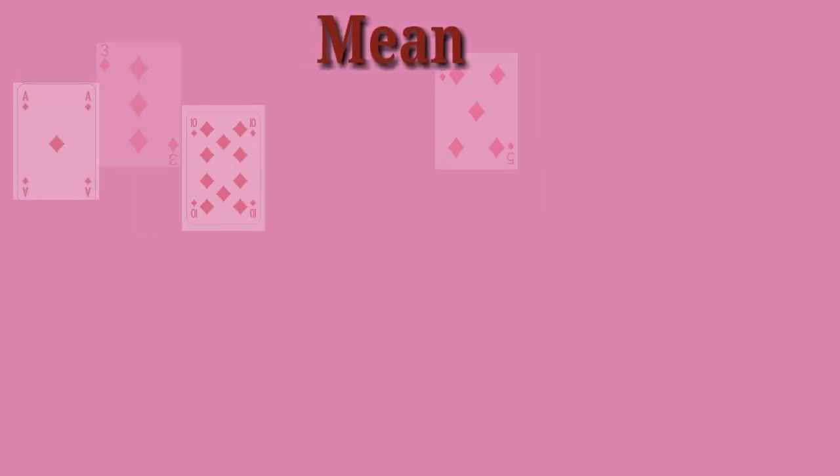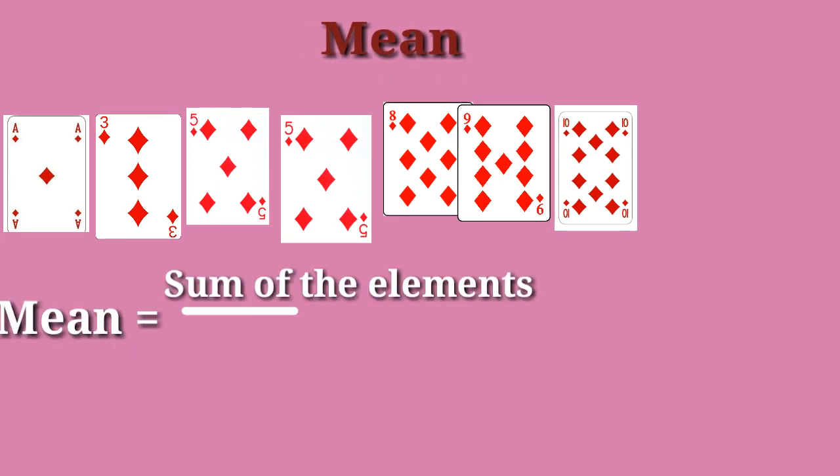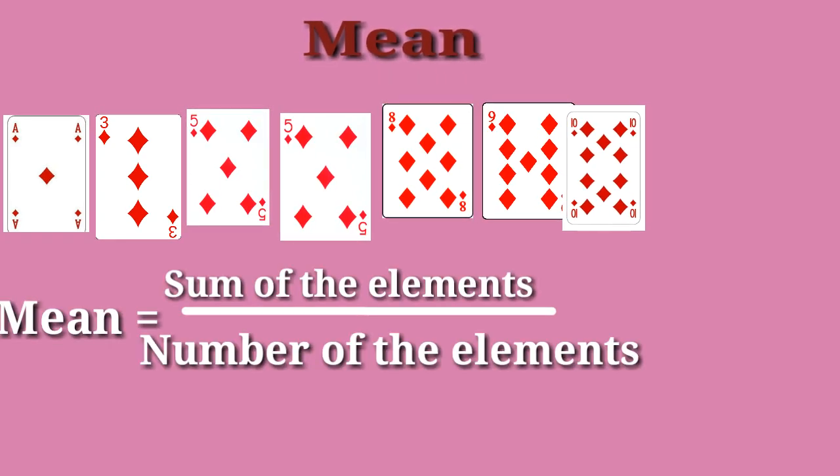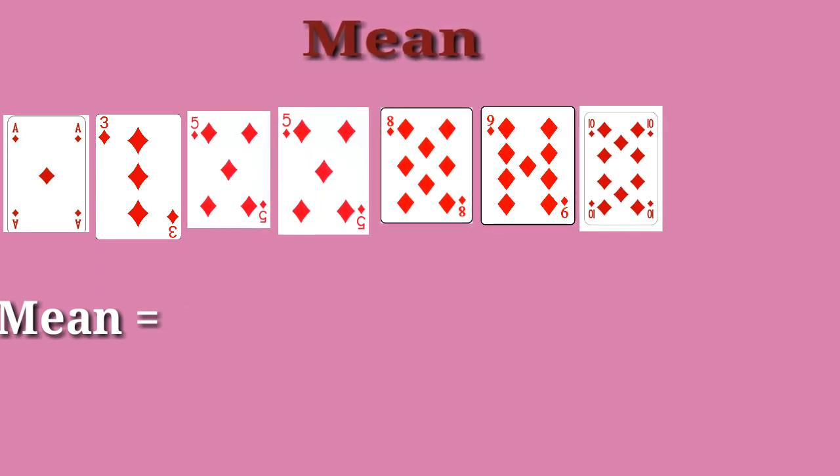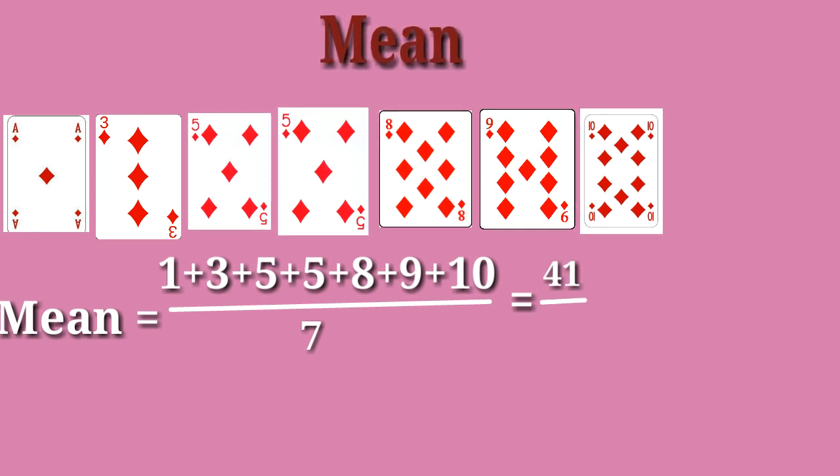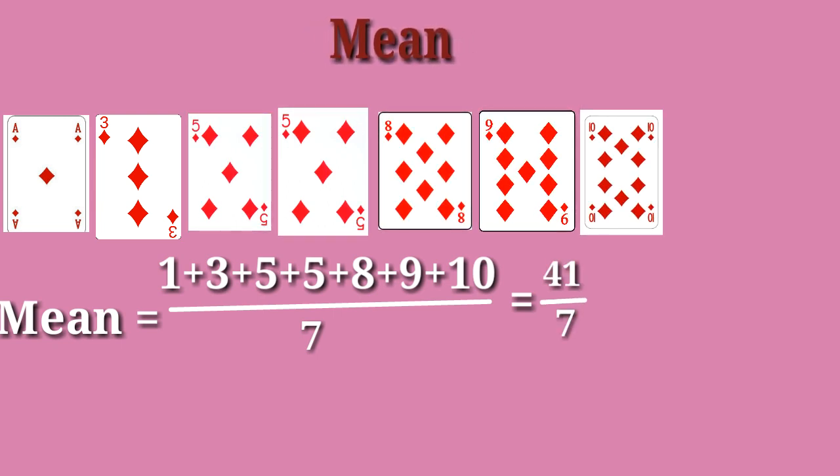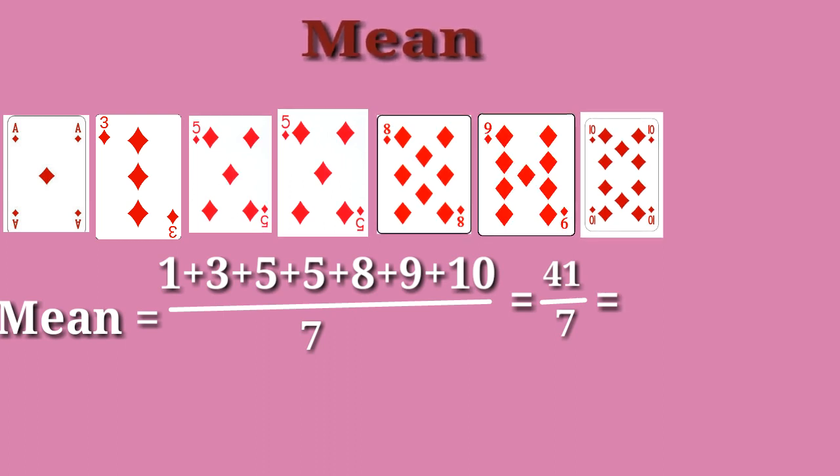Mean equals sum of the elements divided by number of elements. Here, sum of the elements equals 41 and number of elements equals 7, so 41 divided by 7 is equal to 5.86.